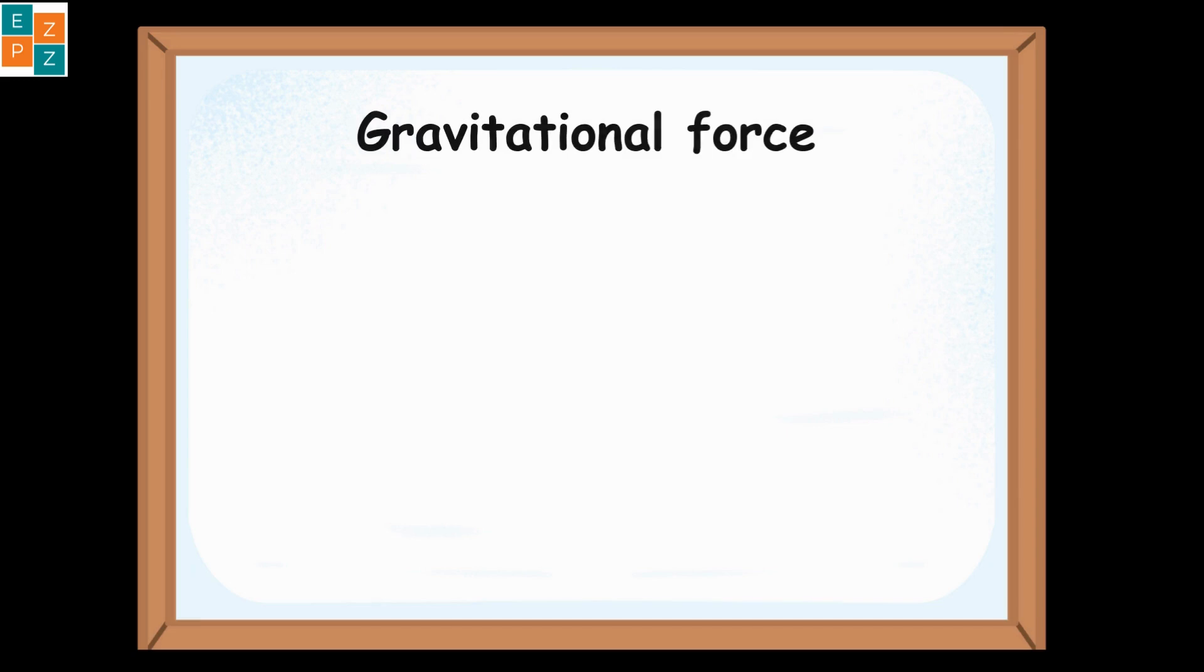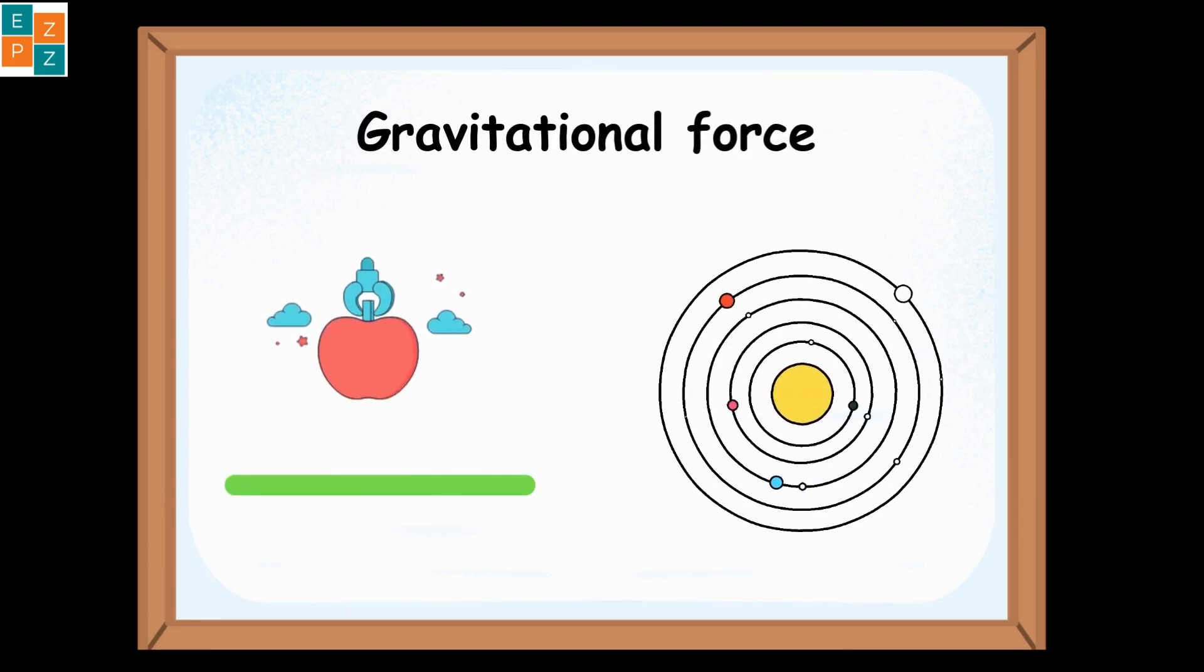The first example is gravitational force. Gravity pulls objects toward Earth, like an apple falling from a tree. It keeps planets in orbit around the sun and holds galaxies together.